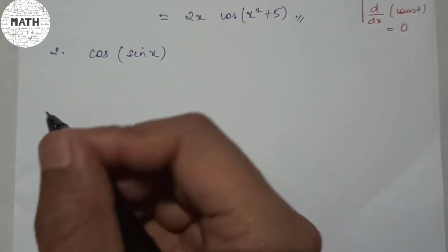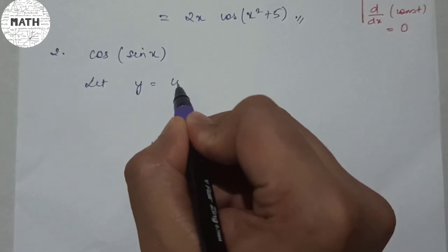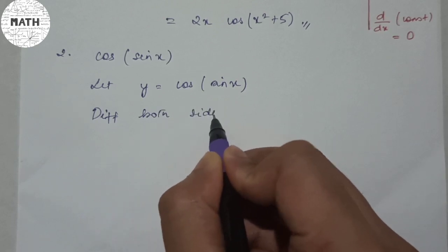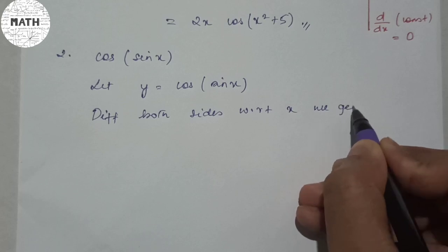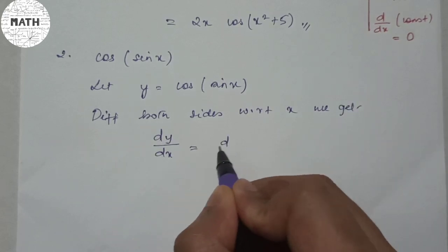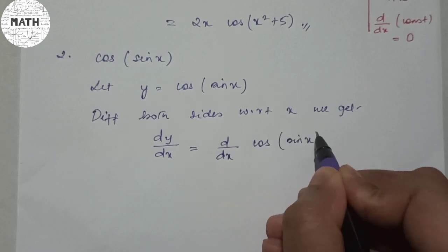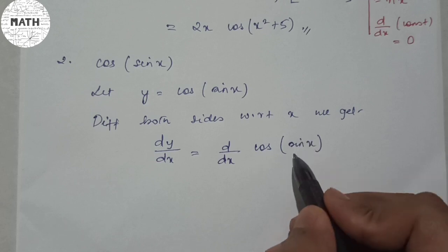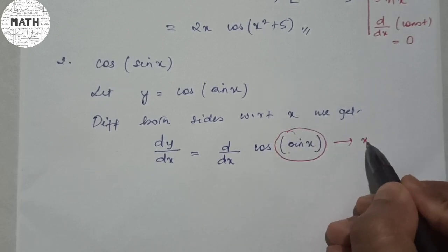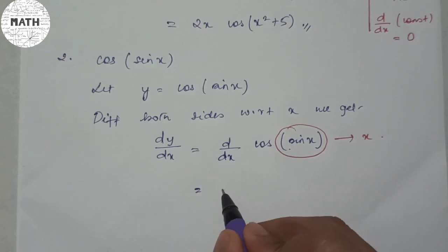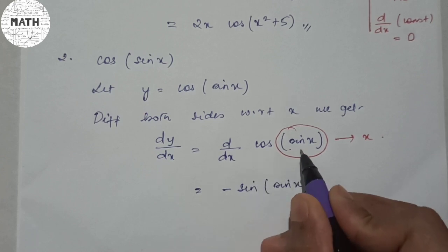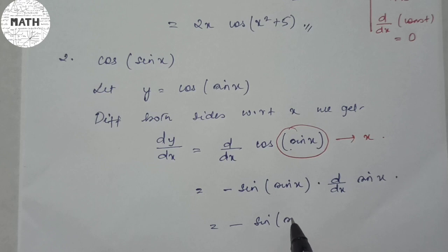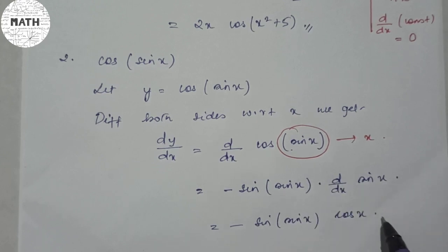Question 2: Let y = cos(sin x). Differentiating both sides with respect to x, we get dy/dx = d/dx of cos(sin x). Imagine sin x as your x. Then d/dx of cos(x) is -sin(x), giving -sin(sin x). Now differentiate sin x once again: d/dx of sin x is cos x. So the answer is -sin(sin x)·cos x.